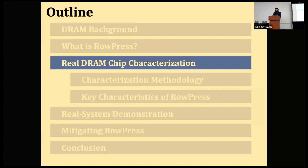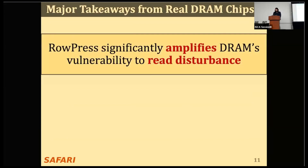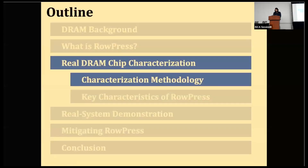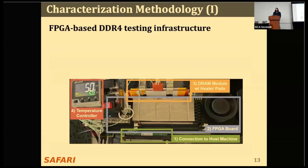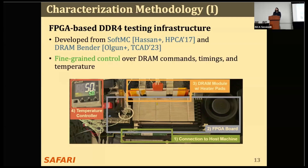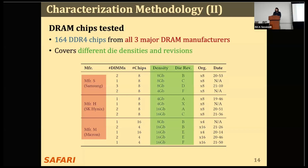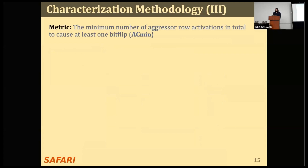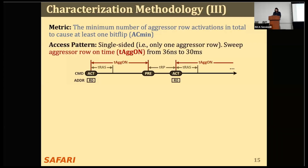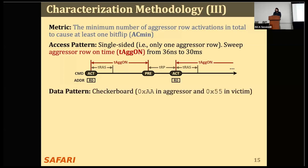Now let's take a look at our detailed characterization of RowPress. The two most important takeaways are: first, RowPress significantly amplifies DRAM's vulnerability to read disturbance; second, it is different from RowHammer. I will start with our characterization methodology. We use an FPGA-based DRAM testing infrastructure developed from DRAM Bender, which gives us fine-grained control over DRAM commands, timing, and temperature. We test 164 DRAM chips from all three major DRAM manufacturers, covering different die densities and die revisions. The key metric is the minimum number of aggressor activations needed to induce at least one bit-flip, or AC min. We use a single-sided RowPress pattern where we only activate one single aggressor, and we sweep the aggressor on-time from 36 nanoseconds to 30 milliseconds. We use a checkerboard data pattern, and unless otherwise specified, we test DRAM chips at 50 degrees Celsius.